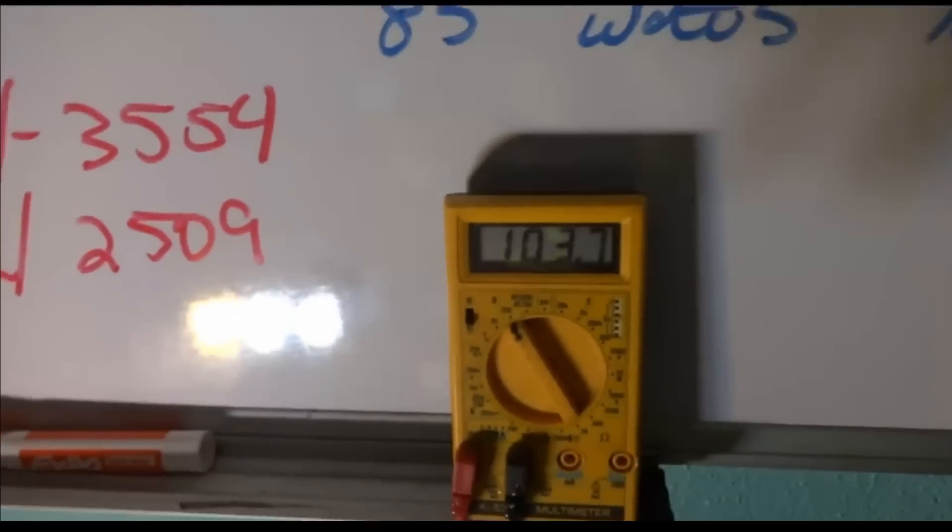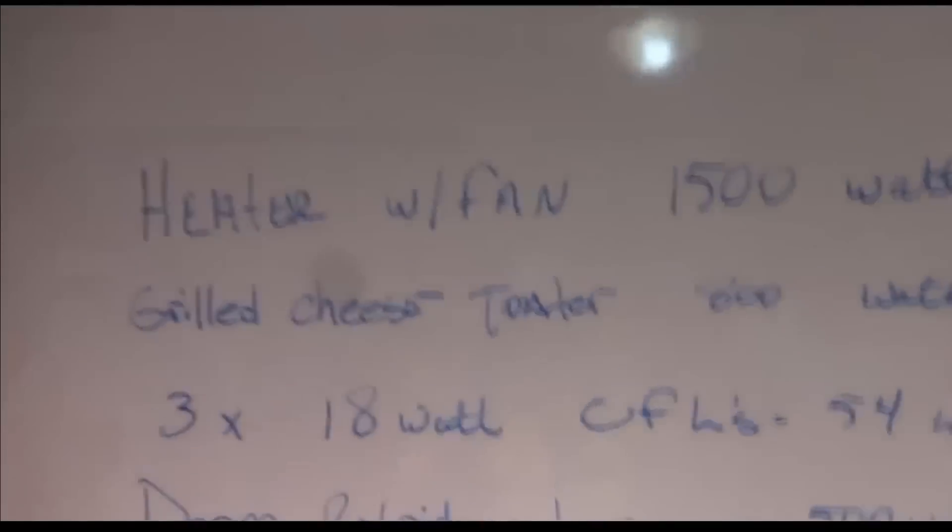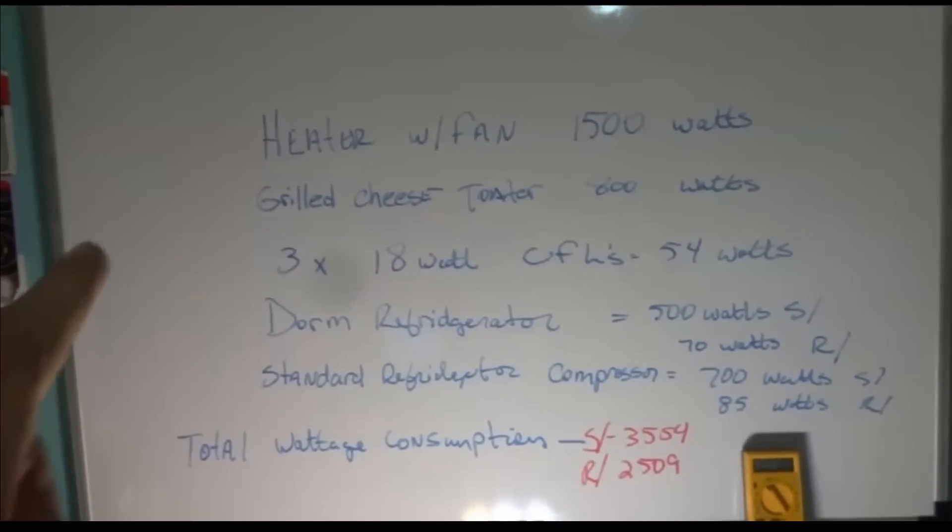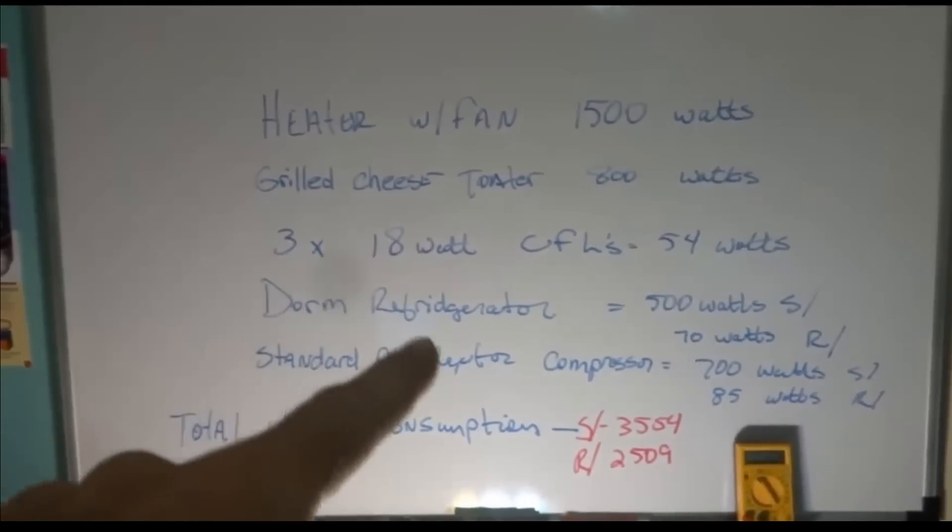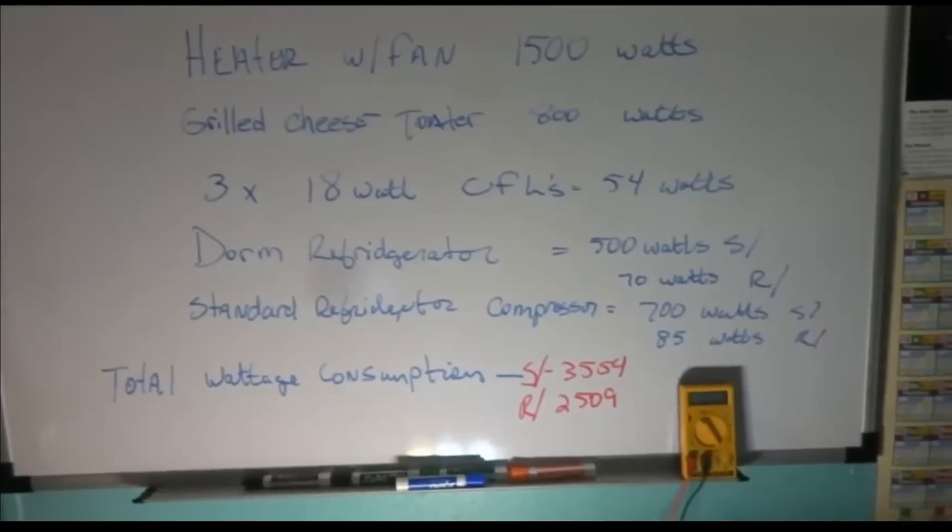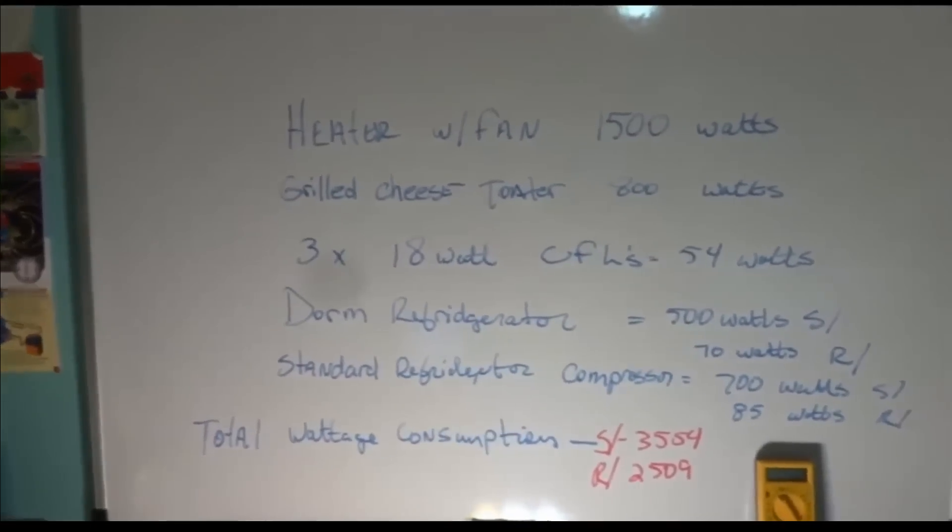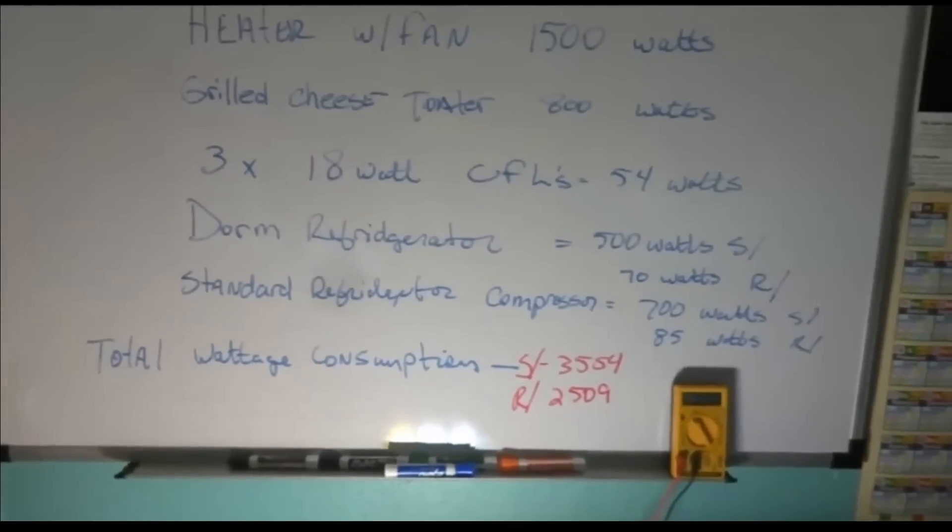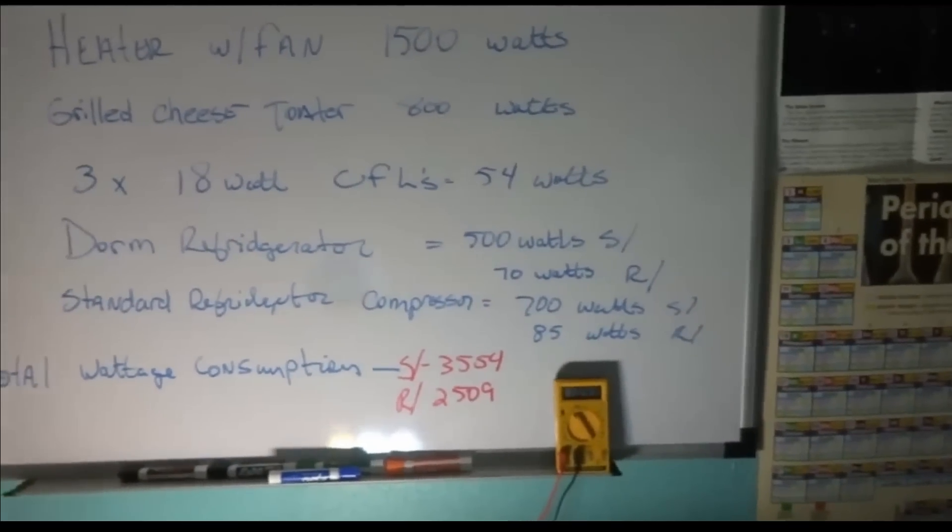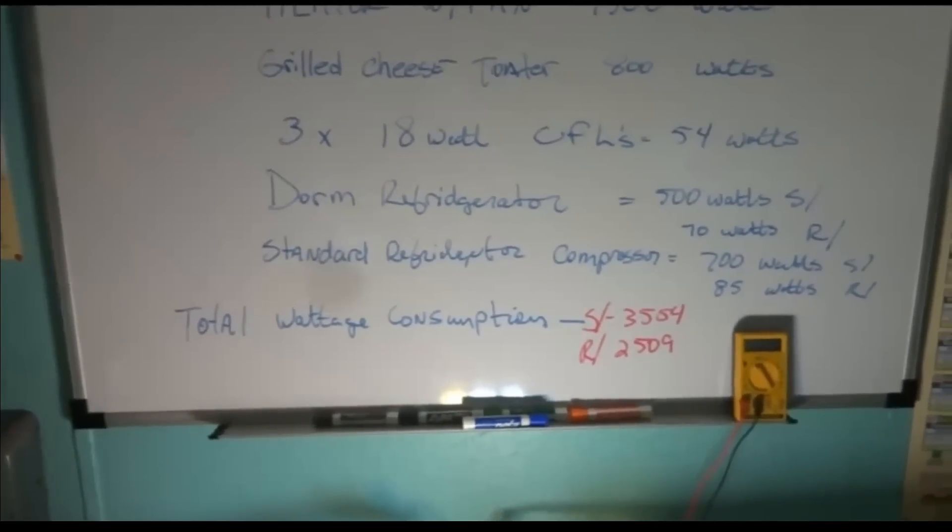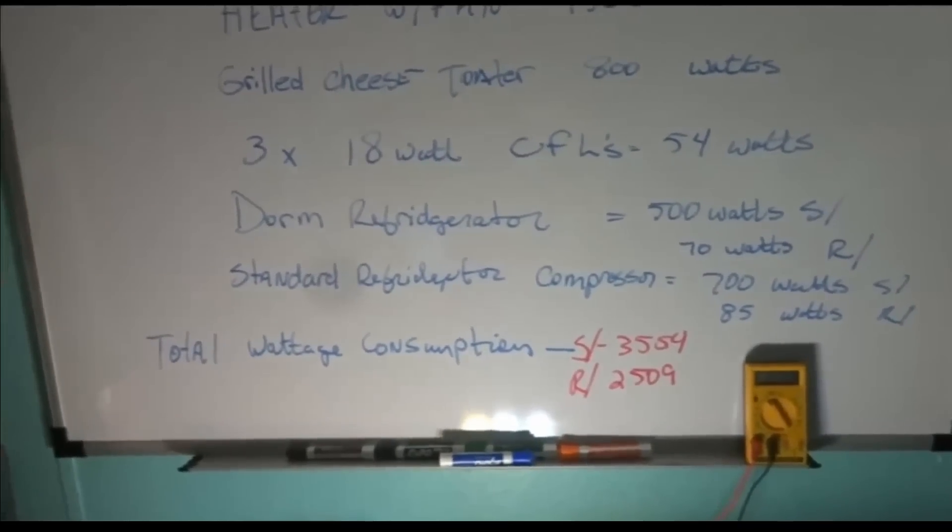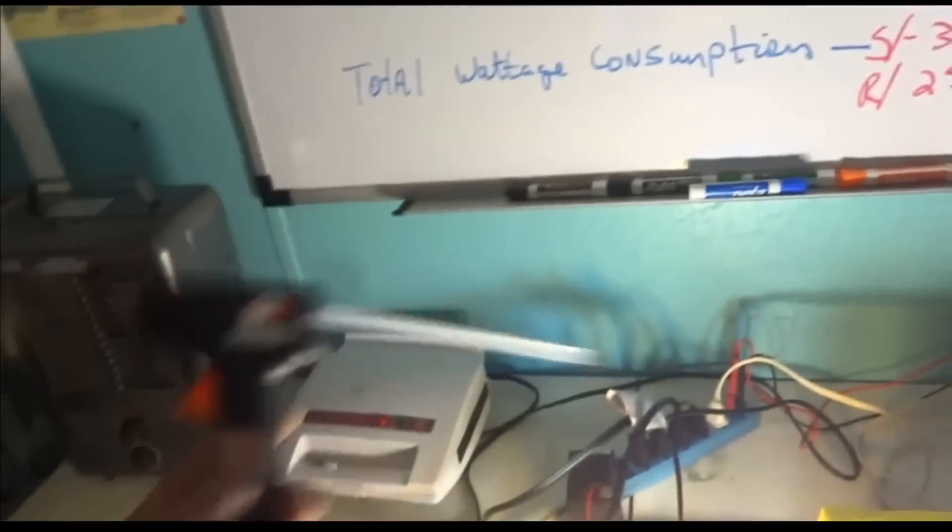We're at 103.67 fluctuating. You can see the strip here. This is basically what we've got up here on the board. Heater with the fan at 1500 watts. Grilled cheese toaster, 800 watts. Three 18 watt CFL spiral bulbs, 54 watts. Dorm refrigerator, 500 watts on the start, 70 watts on the run cycle. A standard refrigerator compressor, 700 watts on the start, 85 watts on the run cycle. Total wattage consumption on the start, 3554 wattage. On the run cycle will be 2509. Now I just added a 30 watt glue gun on here too.